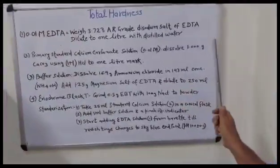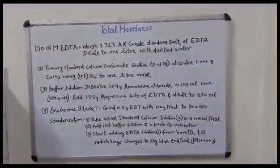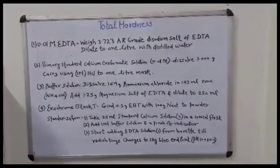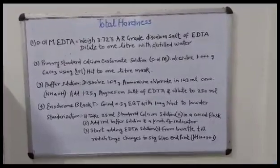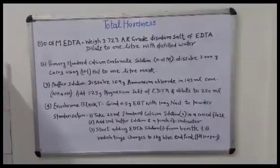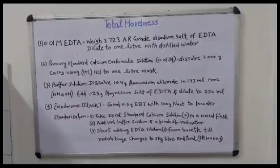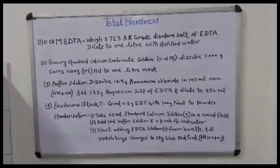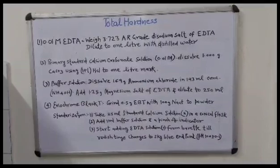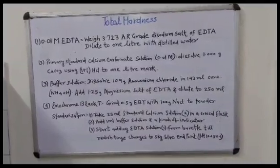Total hardness. Total hardness in water is due to the presence of calcium and magnesium salts mainly. We find hardness in water by complexometric titration with EDTA.